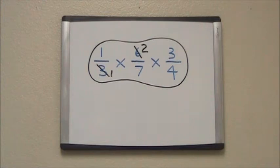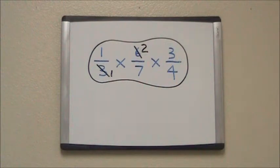Next we look at the second set of fractions, two-sevenths and three-fourths. We see that two is a factor of four and goes into it evenly, so we divide both the two and the four by two.